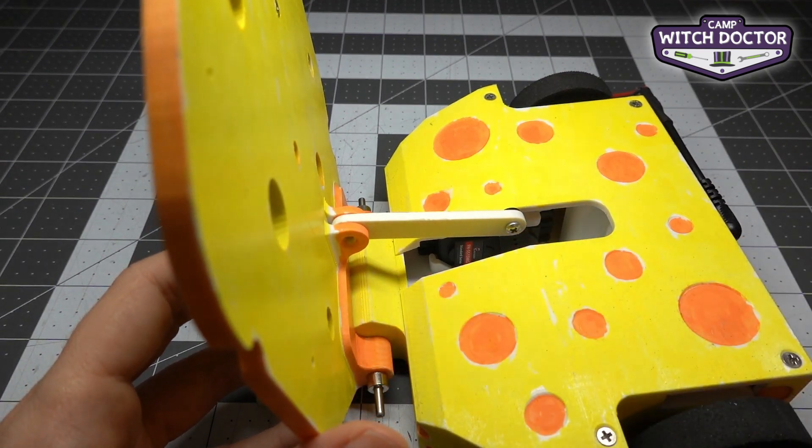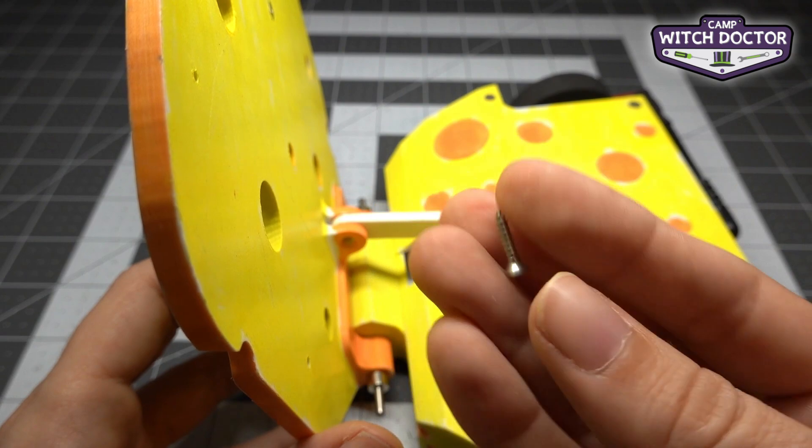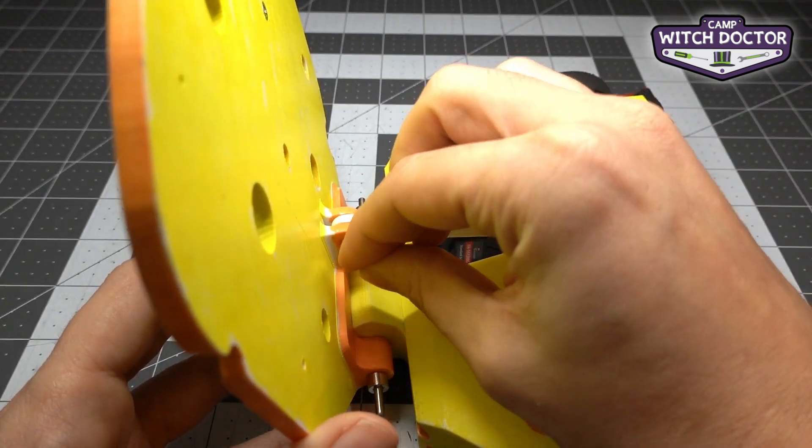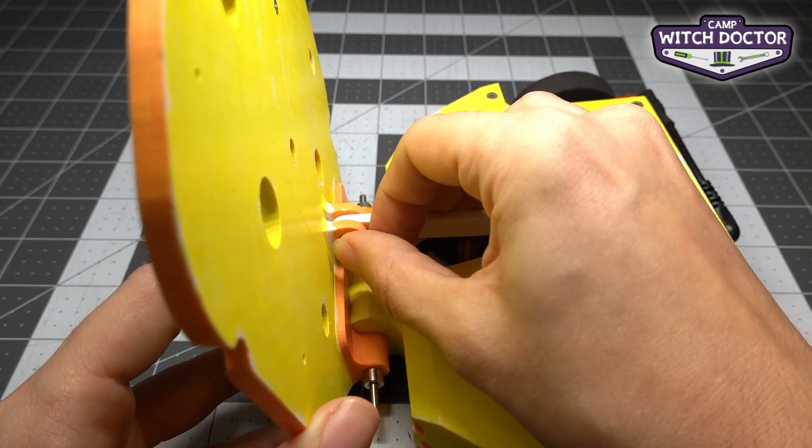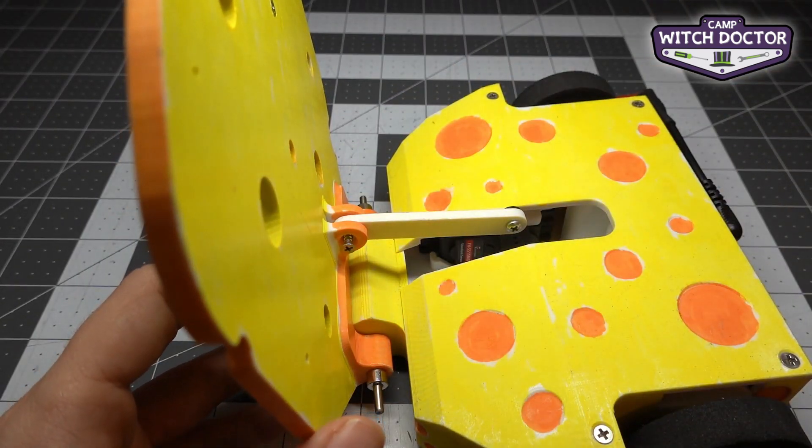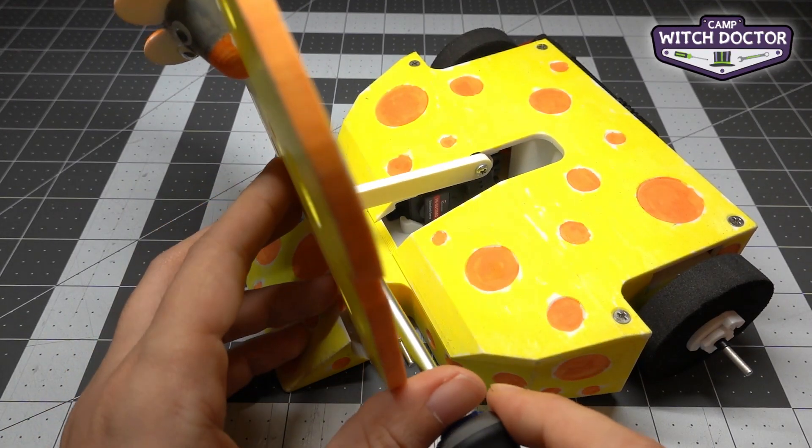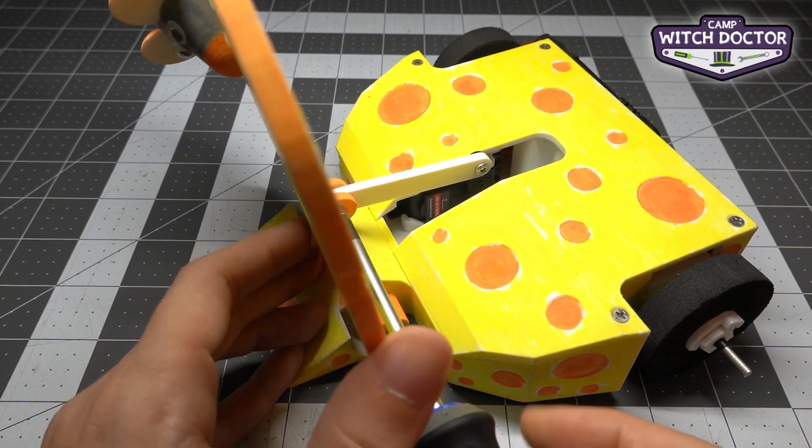Go ahead and find that side, and then we're going to take one of these screws just like you've used for most of your build, and we're going to put it in that hole making sure it goes through the flipper link all the way to the other side. Then we'll use your Phillips screwdriver to install it.